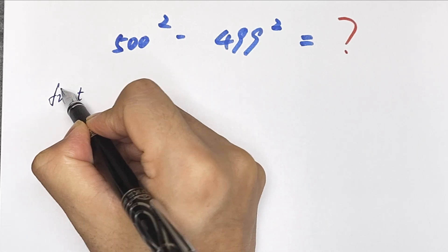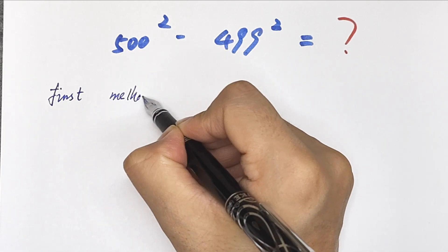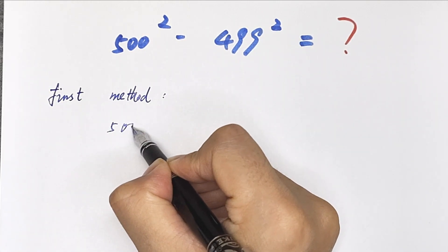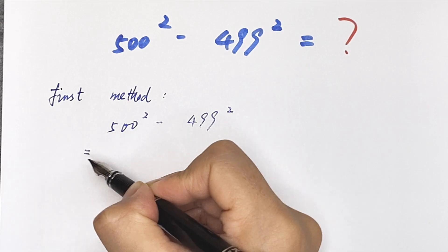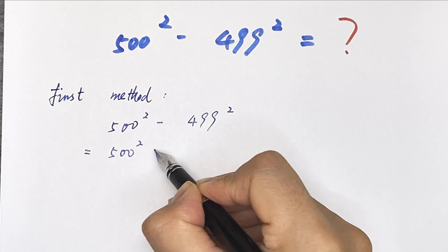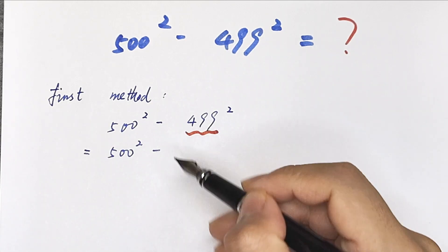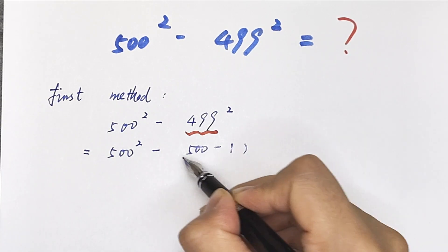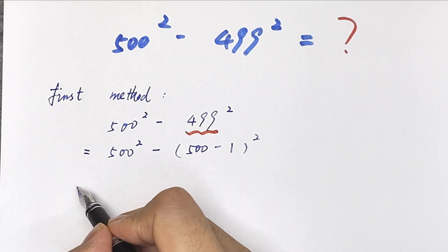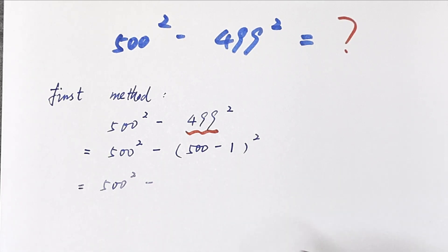So, first method: 500 squared minus 499 squared is equal to 500 squared minus 499. It seems as 500 minus 1 bracket squared is equal to 500 squared minus, this is perfect squared.